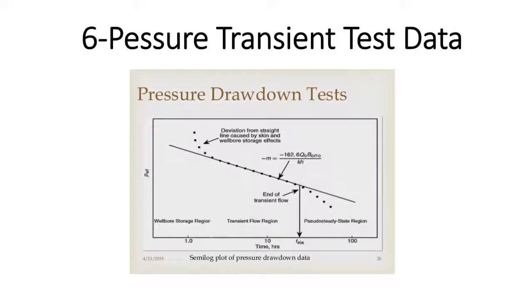Pressure transient test data or well test data can be obtained from the drill stem test, known as DST. I'm going to talk about well test data more later, but for now just bear in mind that this data can be interpreted for formation permeability calculation, looking into the faults and presence of reservoir boundaries. In the following picture you can see how pressure transient data look like in a plot.